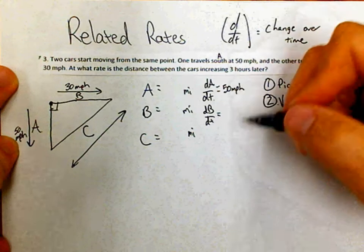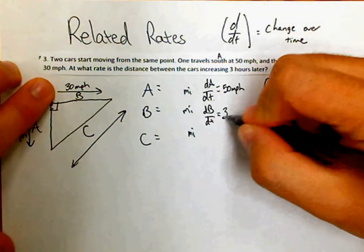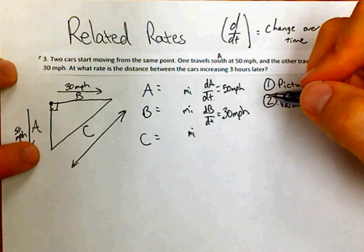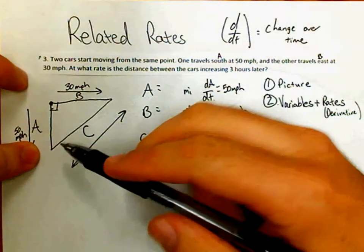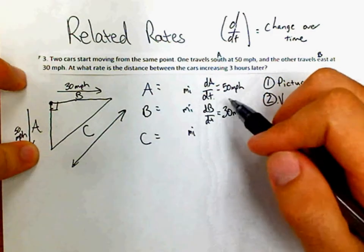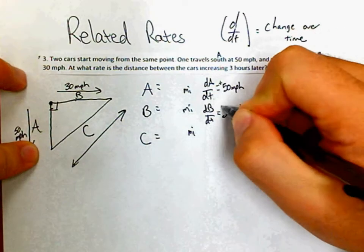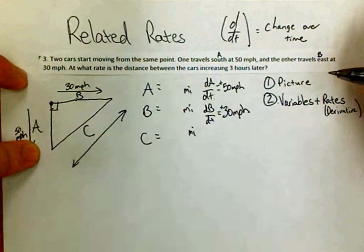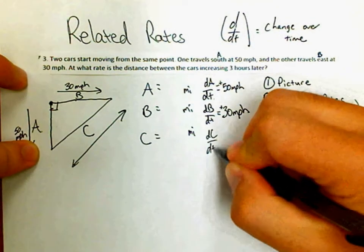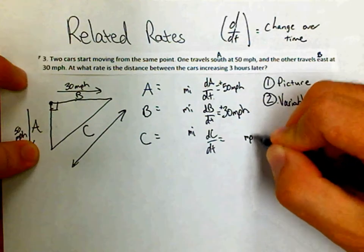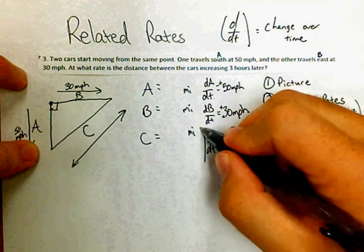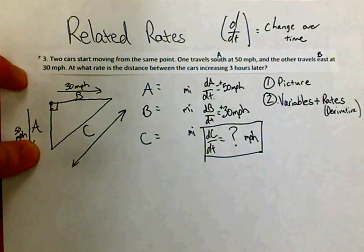Car A is going down and car B is going to the right. The important thing is that the sides are increasing, which means the rates will be positive. If the sides were decreasing, some of those rates might need to be negative. We also have dc/dt, which we don't know — that's the answer to the question we have to find, and it's measured in miles per hour.